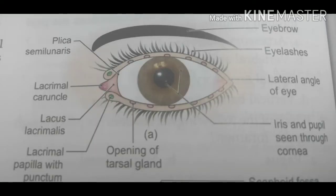Lateral to the caruncle, the bulbar conjunctiva is pinched up to form a vertical fold called the plica semilunaris. The eyelid is attached to the margins of the orbital opening. Its free edge is broad and has a rounded outer lip and sharp inner lip. The outer lip presents two or more rows of eyelashes or cilia, except in the boundary of the lacus lacrimalis. At the point where eyelashes cease, there is a lacrimal papilla on the summit of which there is the lacrimal punctum.